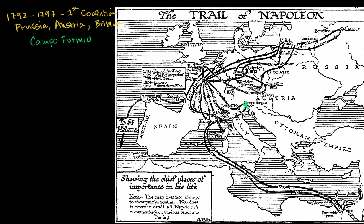At that time, Napoleon was in charge of the Italian campaign, and the government of France was the Directory, in power to a large degree because of Napoleon's ability to defend them. Then from 1798 to 1802, you have the Second Coalition.